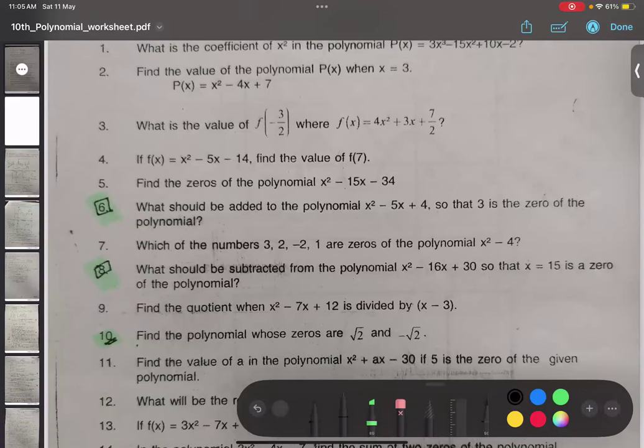So, in question number 6, what should we add to the polynomial so that 3 is the zero of the polynomial? When we say zero, that means this is the value of x, yes or no? Yes.